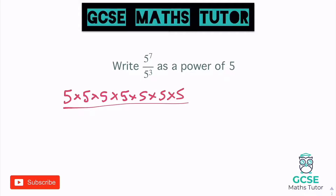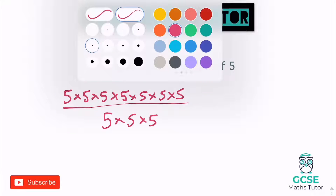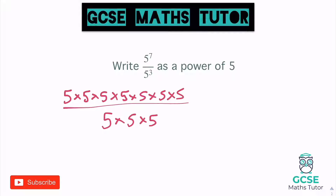And we're dividing that by five to the power of three, which is five times five times five. So if we have a look, each one of these fives on the top is getting divided by a five on the bottom. So if I have a look at this one — this five here — if I cross that one out, I can cross this one out as well, because that's five divided by five, which equals one. So they cancel each other out.